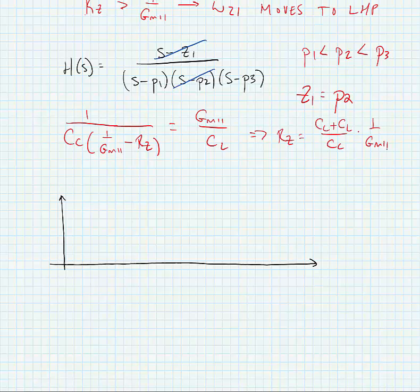And we would get the following expression: cc plus cl divided by cc times one over gm2 divided by cc.